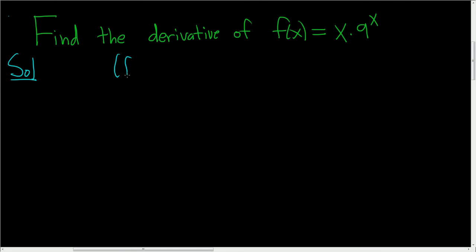The product rule says if you have f times g, the derivative is the derivative of the first times the second plus the first times the derivative of the second. So that's the product rule.